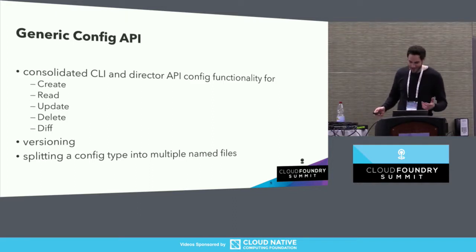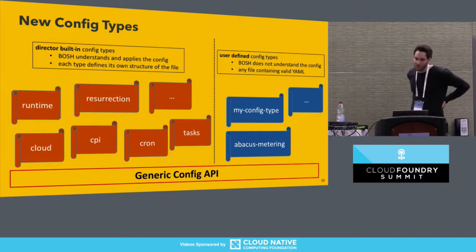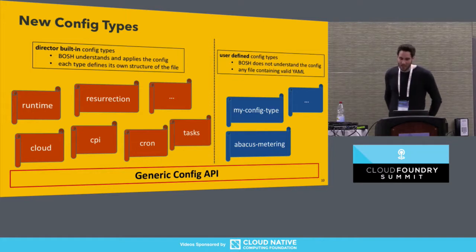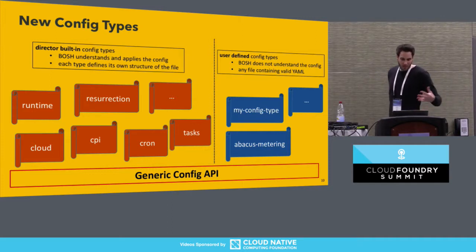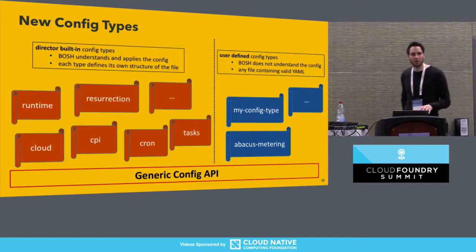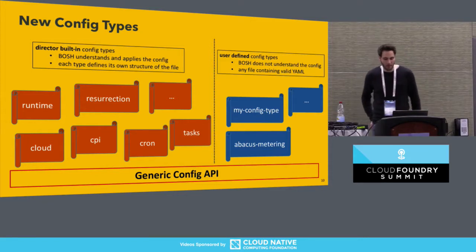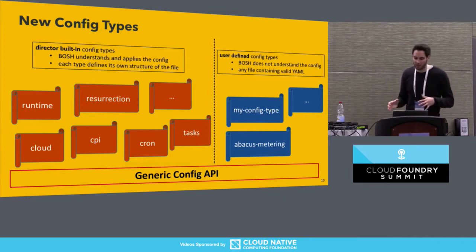The real cool thing about the generic config API is that it paves the way for new config types and use cases. The generic config API is the building block for new configuration types and therefore new use cases. We differentiate between director built-in types — where BOSH understands and applies the content of the configuration and the user must comply with the YAML structure — and user-defined types, where the user can upload any valid YAML file to the BOSH director and assign any name to the type.